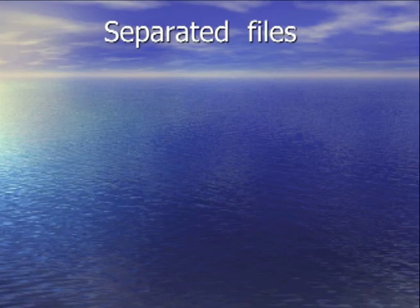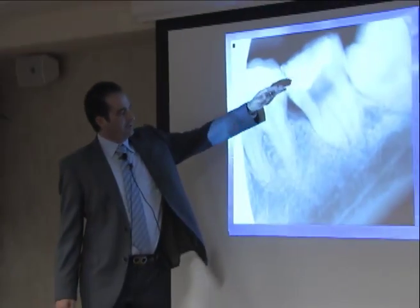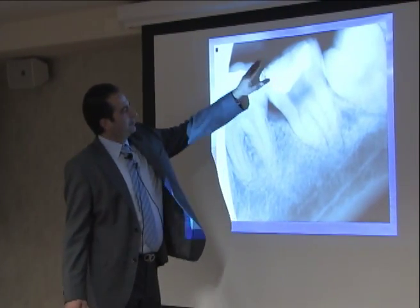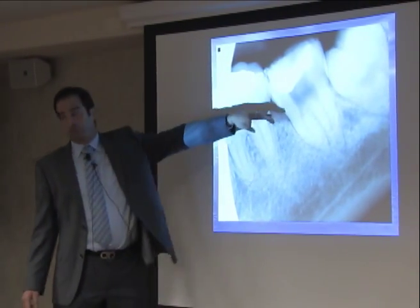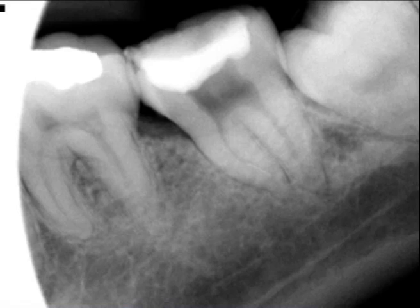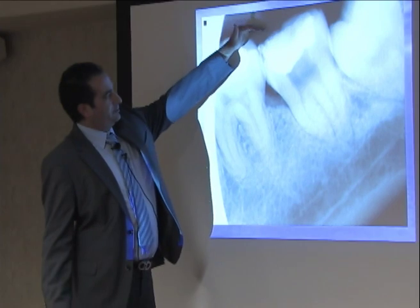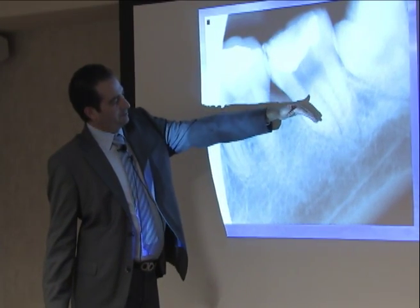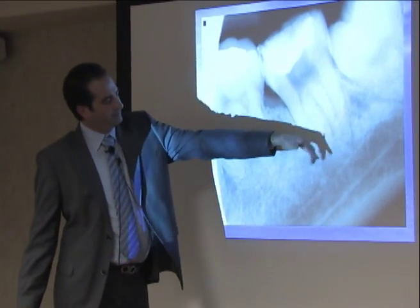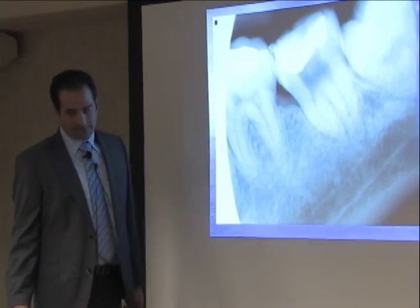I'm going to switch around to different cases on separated files that I've seen in the office. Here's number 18 on a younger patient — a separated file right here. You can see what the problem is with this access opening. It doesn't have a straight-line access opening, so when the operator goes in, the instrument has to go around this angle, come around this angle, go around this angle, and then another angle down here. So you're bound to fracture the file.